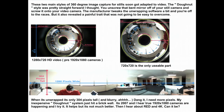These two styles of 360-degree image capture for stills soon got adapted to video. The donut style was pretty straightforward — you unscrew the bent mirror off your still camera and screw it onto your video camera, the manufacturer tweaks the software, and you're off to the races. But it revealed a painful trait that was not going to be easily overcome. Six years ago I was doing this at 720p, then some proper 1080 HD cameras rolled out. So I was able to get from my 304-pixel-tall image to about a 550-pixel-tall image. You can see on the left — that's the only usable part of any exposed image when using one of these donut systems. When it's unwrapped it's 304 pixels tall. It's blurry. I need more pixels. My inexpensive donut system just hit a brick wall. It's 2007.